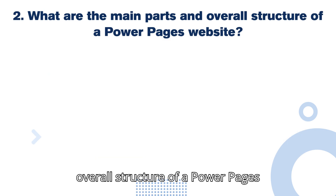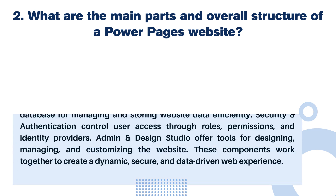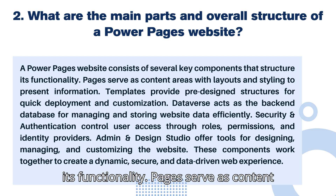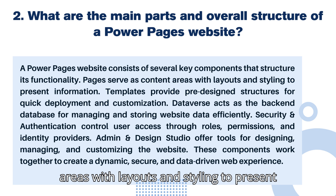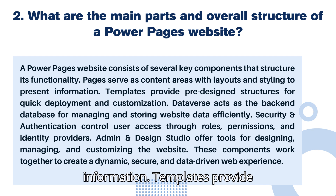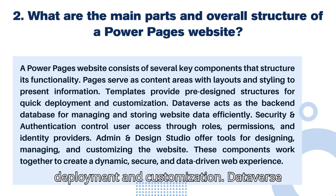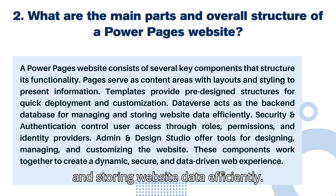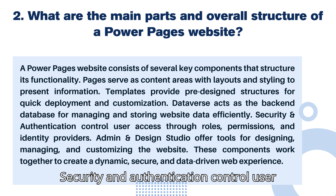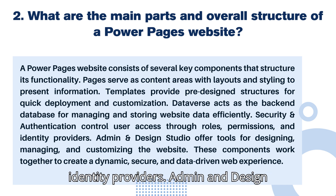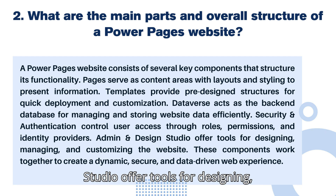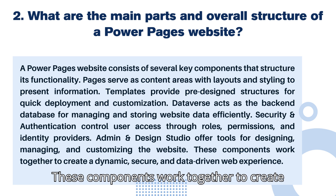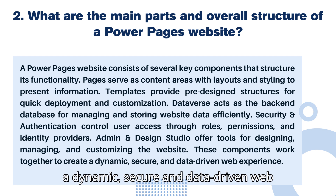Question 2: What are the main parts and overall structure of a Power Pages website? A Power Pages website consists of several key components. Pages serve as content areas with layouts and styling to present information. Templates provide pre-designed structures for quick deployment and customization. Dataverse acts as the backend database for managing and storing website data. Security and authentication control user access through roles, permissions, and identity providers. Admin and Design Studio offer tools for designing, managing, and customizing the website, working together to create a dynamic, secure, and data-driven web experience.